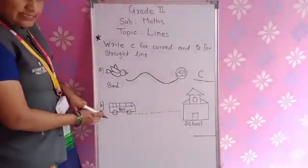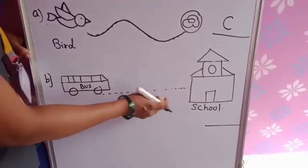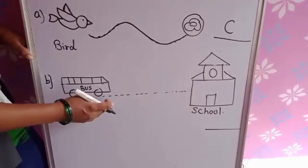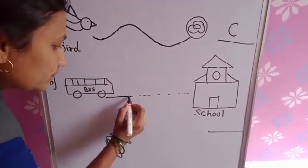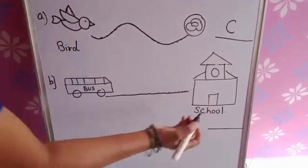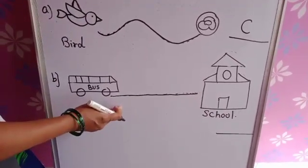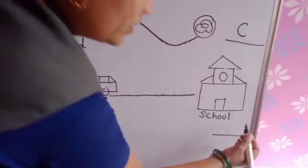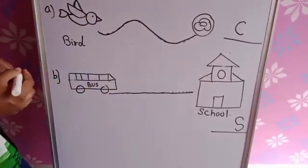In the second example, this is a bus and this is a school, and there is a dotted line. Now join these dots. Tell me which type of line is it? Very good. This is a straight line. So write C in front of that example.